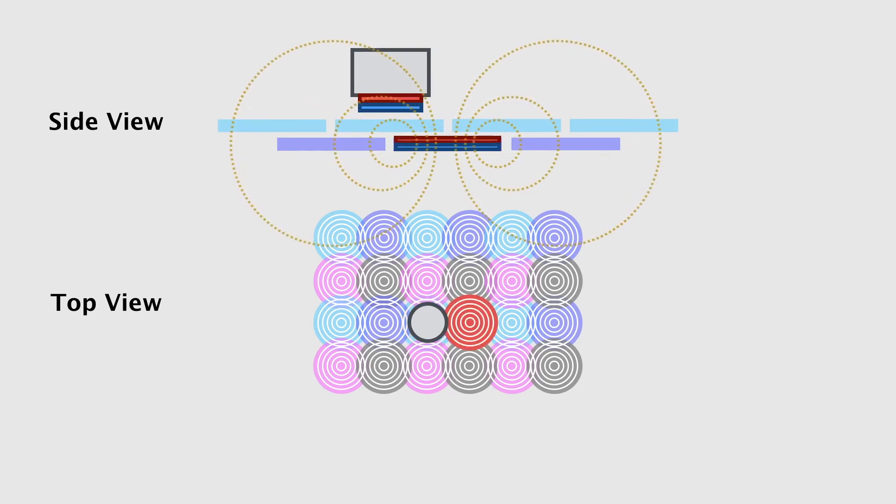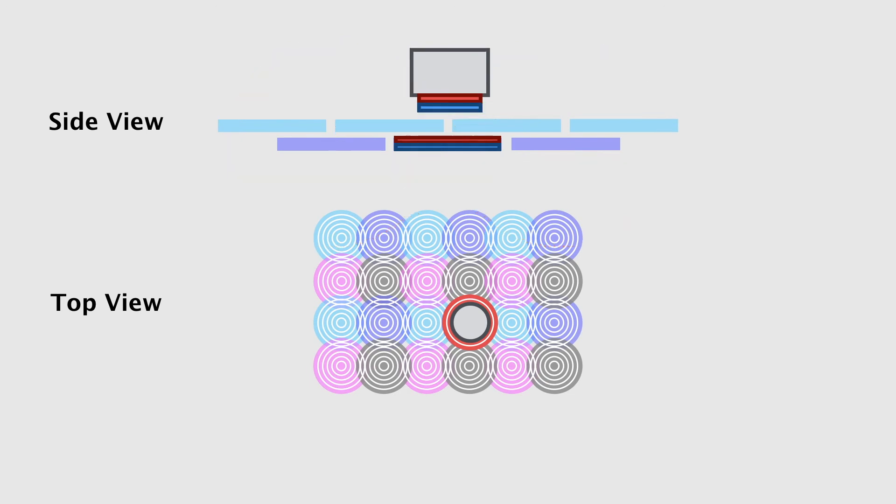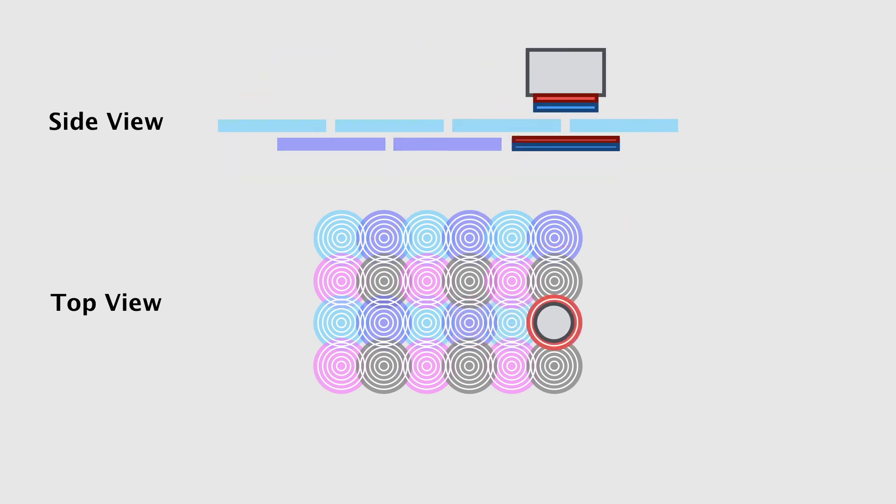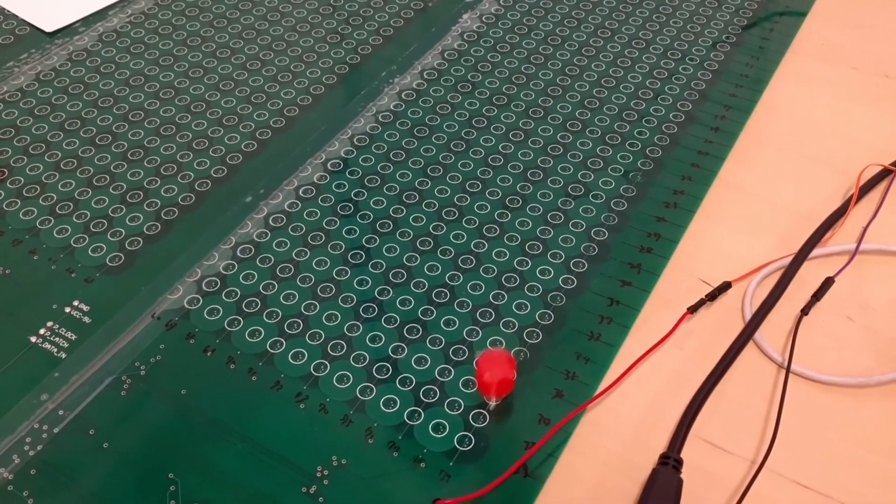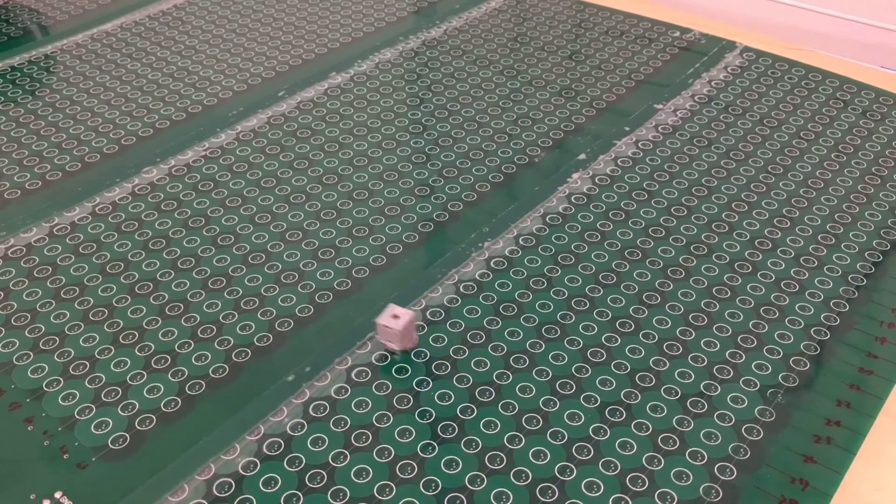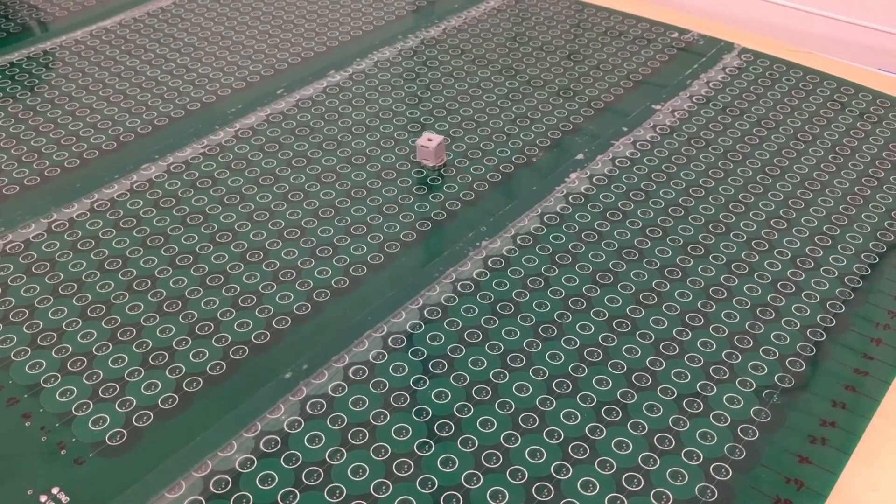By switching the current to the next coil, the magnet can move from one coil to another. In this way, we can move a magnet to any position in the XY grid. The PCB is 80 by 40 cm in size, which can be fabricated with standard PCB manufacturing.